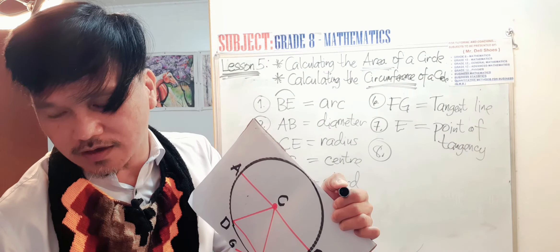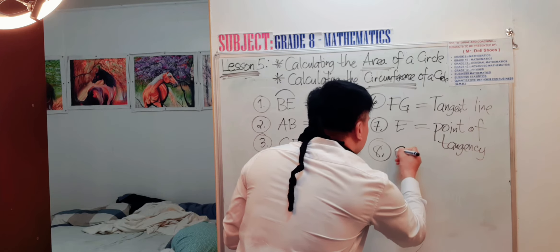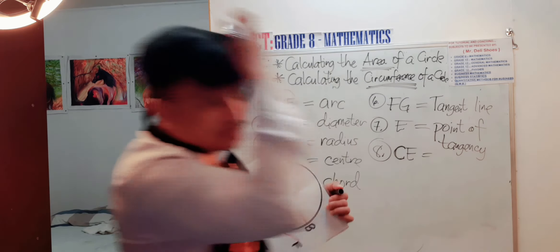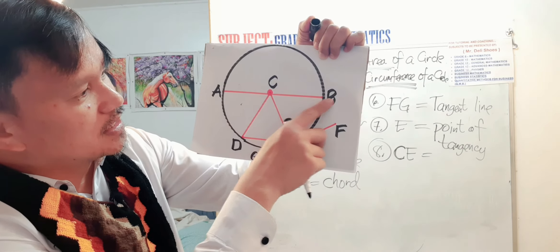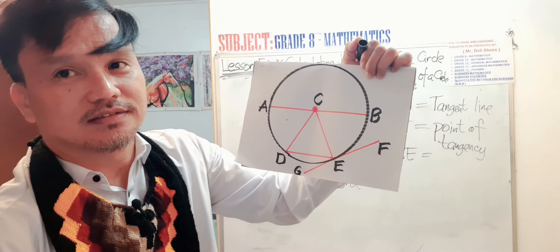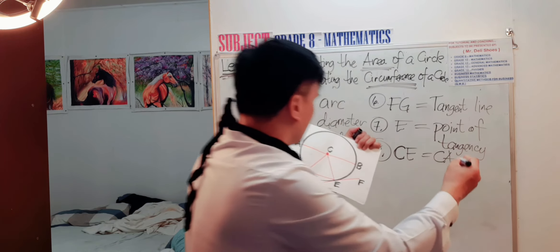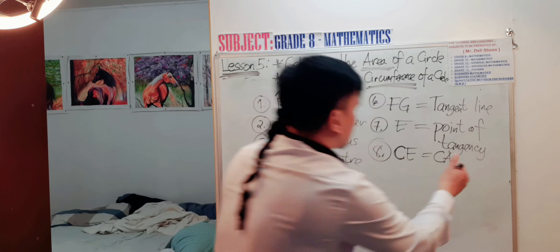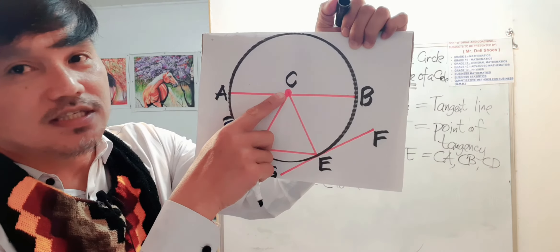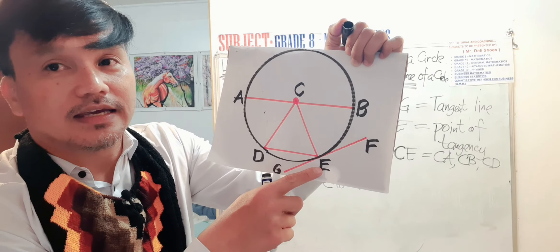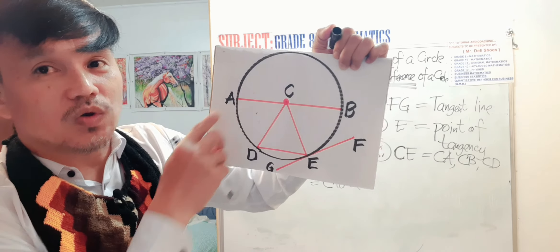Question number eight: the length of C-E is the same as C-B, C-D, and C-A. The answer is CE equals CA, CB, and CD. Why? Because C-E, C-B, C-D, and C-A are all radii.